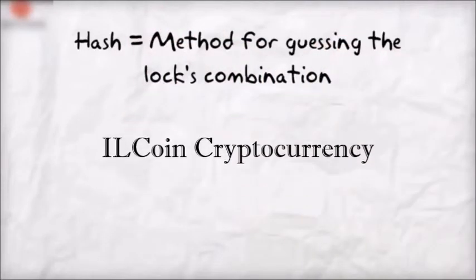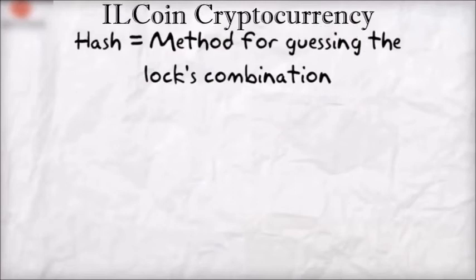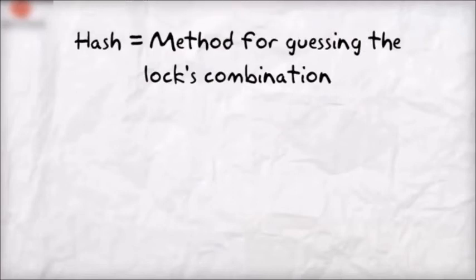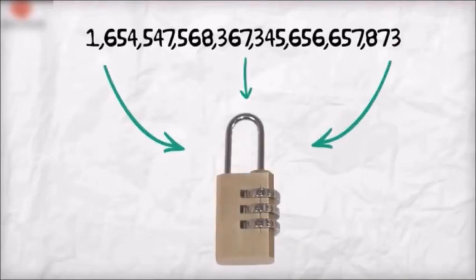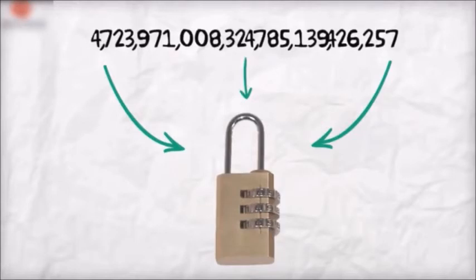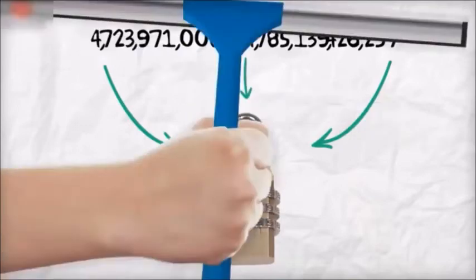Hashing works by turning a random large number into a smaller number by taking certain actions. For example, each time you guess the lock's combination, you'd randomly pick a large number and take the first, middle, and last numbers from it. If this doesn't work, you randomly pick a different large number and guess again. Of course, the miner's calculations are much more complex, but the idea is that you decide on a certain method of action for guessing and execute it until you get the answer.